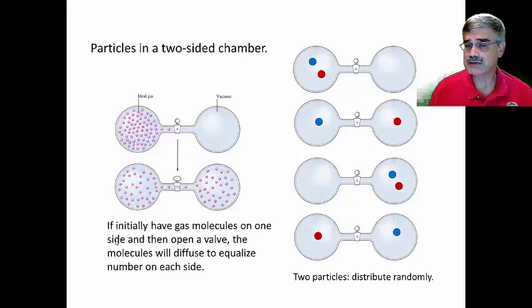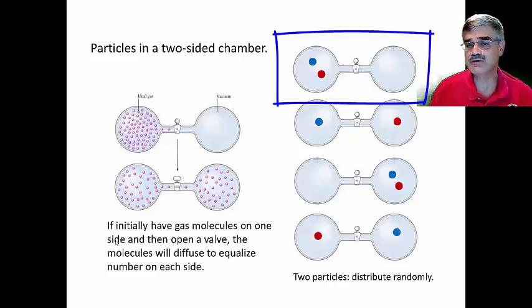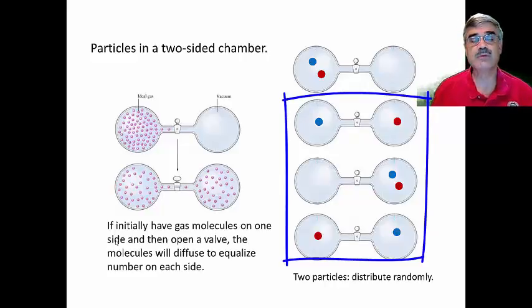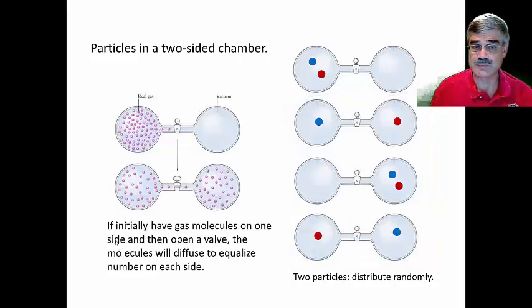And our sampling would also identify cases in which the red and blue are on the left side where they started. But if you look at these four possibilities, only in the top case would the two gas molecules be on the same side that they started. One out of four times the gas molecules will be on the left, but three out of four times they will be spread between the two sides. That is, there is a statistical basis for the spreading of the gas molecules between the two sides of this apparatus. With only two gas molecules, it's pretty simple.